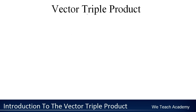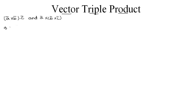Hello guys, welcome to VTC Academy. Today in this presentation we are going to discuss the vector triple product. Products like a̅ × (b̅ × c̅) and (a̅ × b̅) × c̅ are called the vector triple product. If a̅, b̅, and c̅ are three vectors, then we can find the value of a̅ × (b̅ × c̅) using the formula: (a̅ · c̅)b̅ − (b̅ · c̅)a̅.